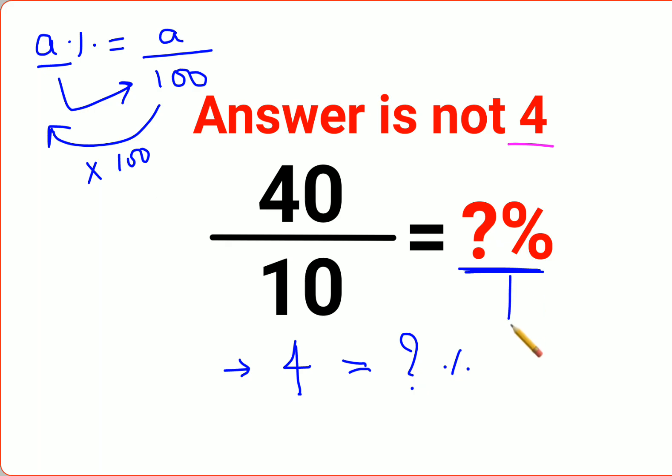Therefore, final answer will be 4 into 100. That is nothing but just 400%. I hope this is very, very clear to everyone. That's it for today. I will see you in the next video.